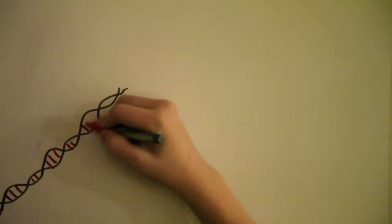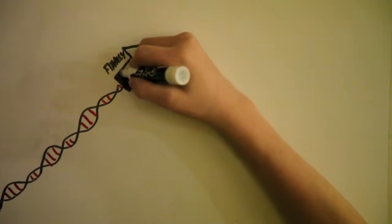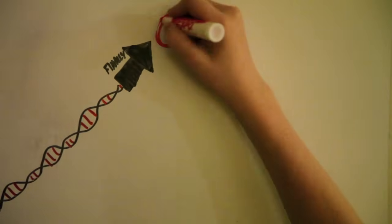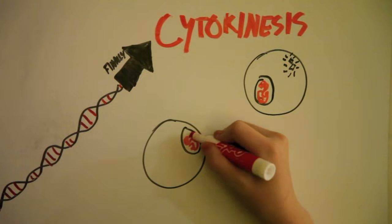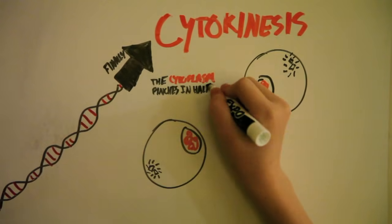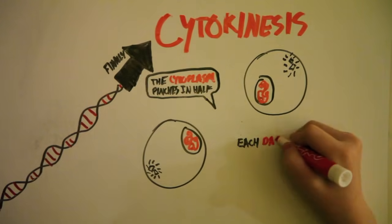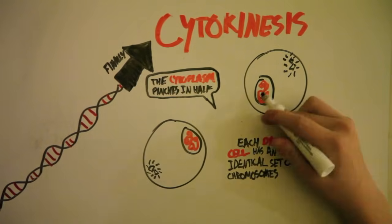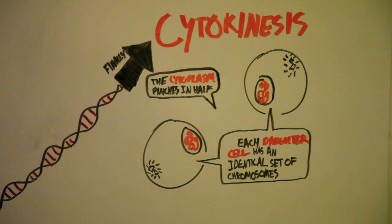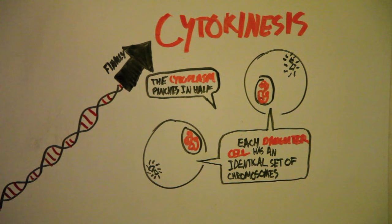Finally, in cytokinesis, the last phase of mitosis, the cytoplasm, which is what makes up the body of the cell, pinches in half. Each daughter cell has an identical set of duplicate chromosomes. Two new cells have been born. They are identical to each other and will each go through mitosis again, if needed.